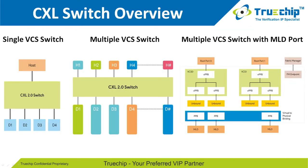We will now overview the CXL switch. Each CXL hierarchy is defined by a virtual CXL switch, so that a host is completely isolated from all other hosts. This is done by configuring internal virtual PCI-to-PCI bridges and binding them to physical PCI-to-PCI bridges that attach directly to the CXL device. There are three types of switches: a single VCS switch with one upstream port and one or more downstream ports; a multiple VCS switch with multiple upstream ports and one or more downstream ports per VCS; and a multiple VCS switch with MLD ports consisting of multiple upstream ports and a combination of one or more downstream MLD ports.